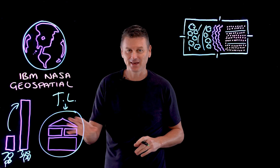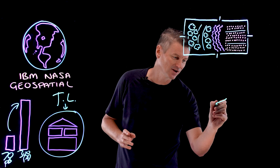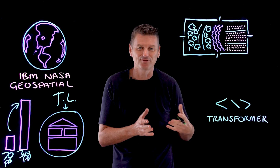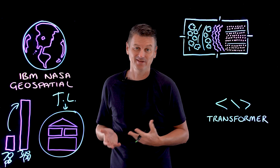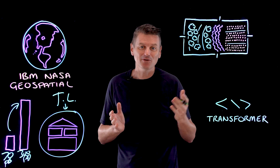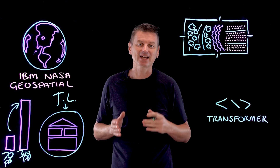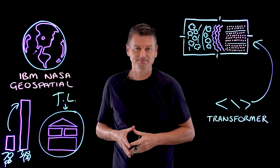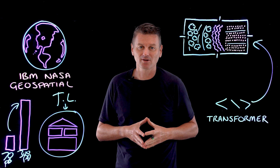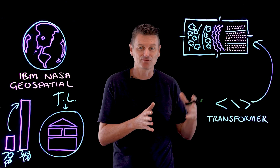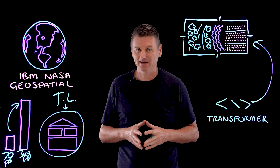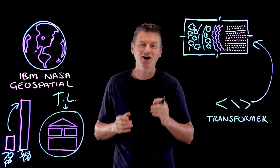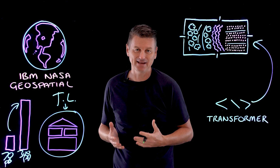Underpinning all foundation models is the concept of a transformer — an AI architecture that can turn heaps of raw data, be that text, audio, or in this case satellite images, into a compressed representation that captures the data's basic structure. We can then use this with a foundation model for a wide variety of tasks with some extra labeled data and tuning. Traditionally, analyzing satellite data like this has been a tedious process because of the time required for human experts to annotate features.